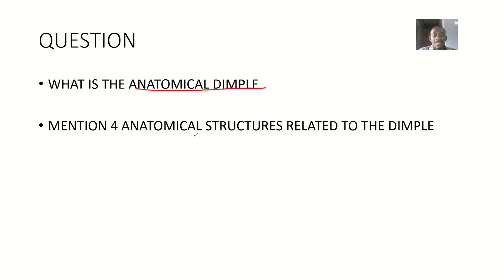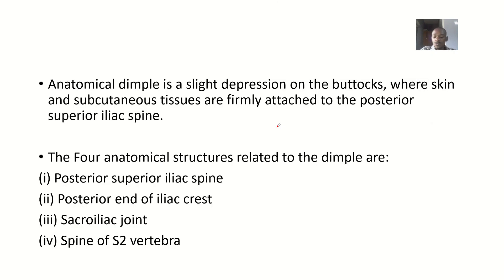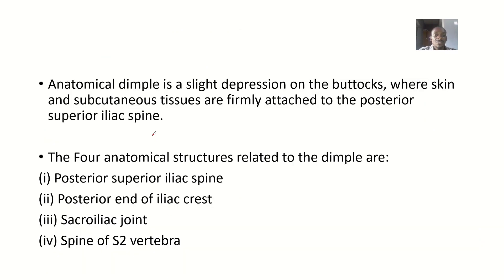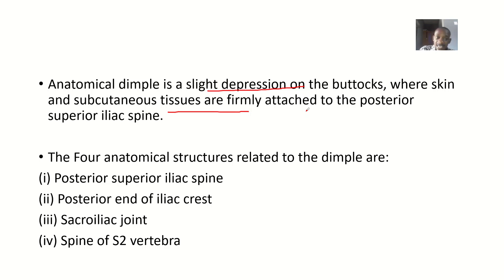So what are anatomical dimples or lumbar dimples, and what are the four structures related to the dimple? Looking at this area, you can see there is a depression — that's an anatomical dimple. The anatomical dimple is a slight depression on the buttocks where the skin and the subcutaneous tissues are firmly attached to the posterior superior iliac spine, the PSIS.